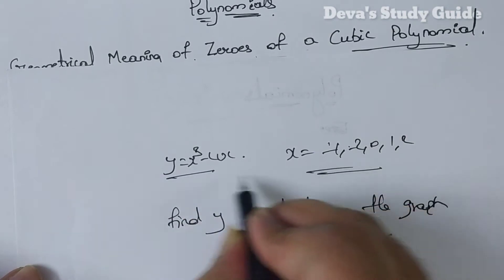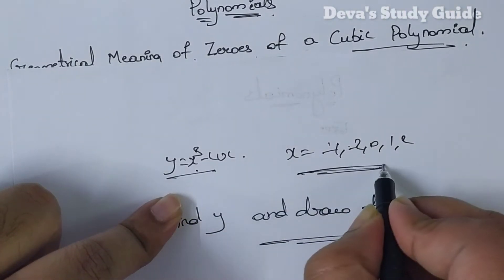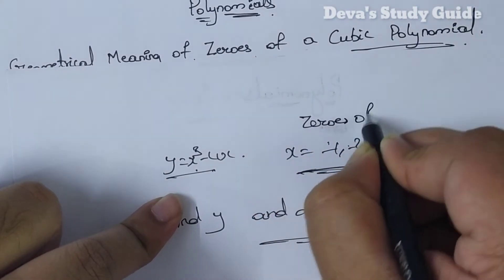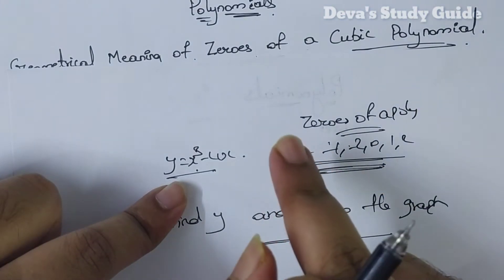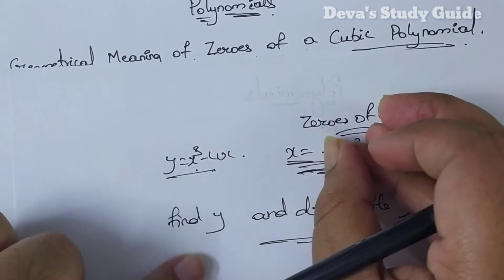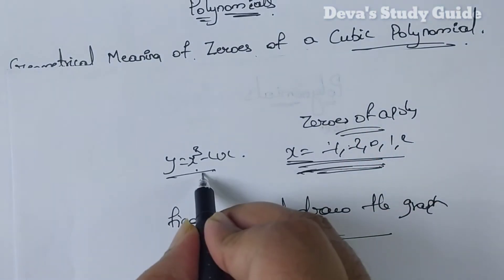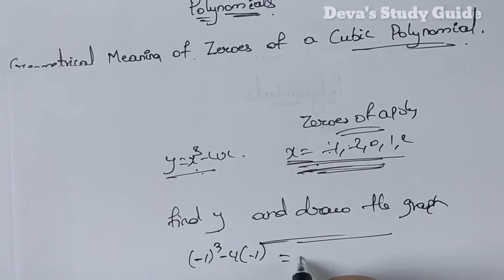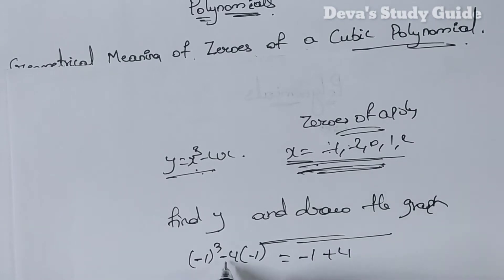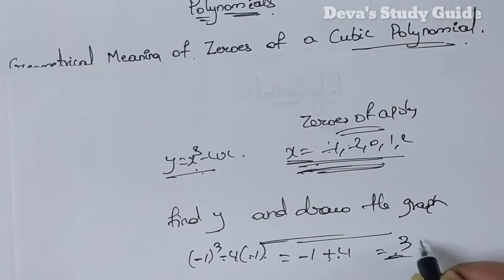y is equal to x cube minus 4x. The x and y values will give us the zeros of the polynomial. For x equals minus 1: minus 1 cube minus 4 into minus 1 equals minus 1 plus 4 equals 3. So y is equal to 3 when x is minus 1.